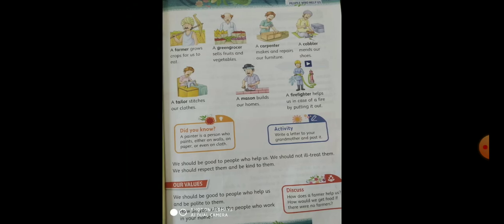Here are some more people who help us. A farmer — a farmer grows crops for us to eat. A farmer grows grains, pulses, fruits, and vegetables, and he makes our life comfortable because we cannot live without food. The next one is a green grocer — a green grocer sells fruits and vegetables. A carpenter makes and repairs our furniture — tables, chairs, cupboards, desks, benches. The tools used by a carpenter are hammer and saw.